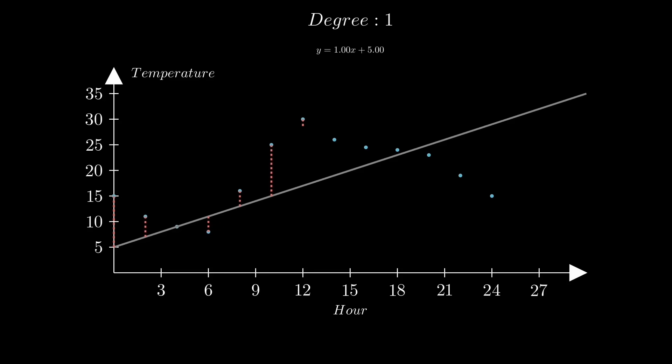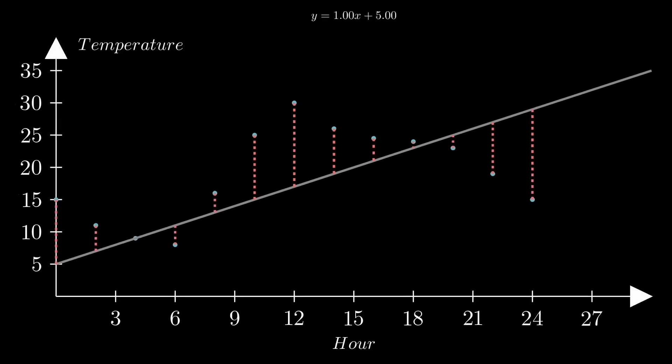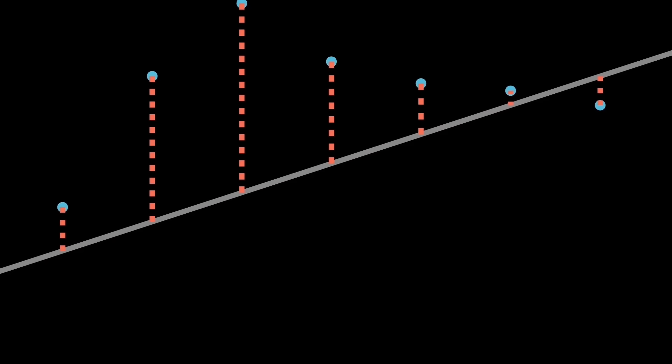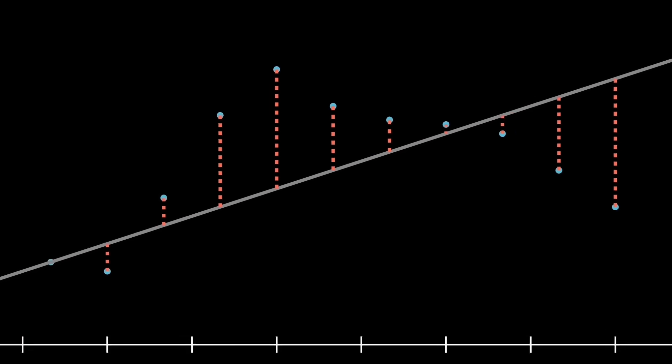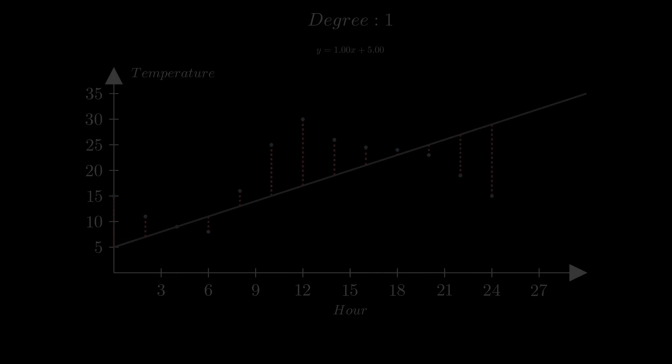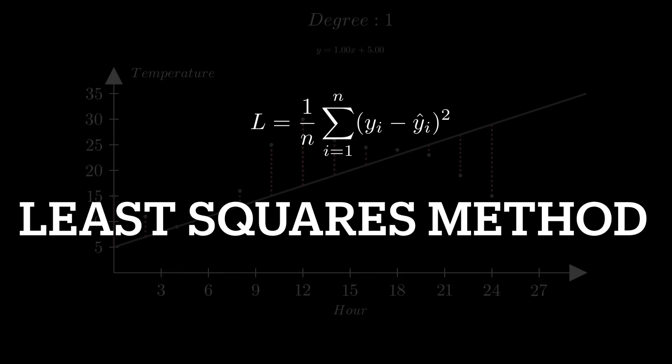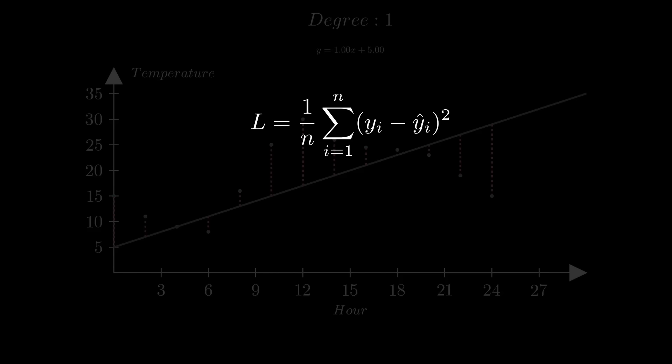These red lines represent the deviations between the line and the data points. We identify the line with the smallest sum of squares of deviations, known as the least squares method. We use the sum of squares rather than just the sum to prevent positive and negative deviations from cancelling each other.